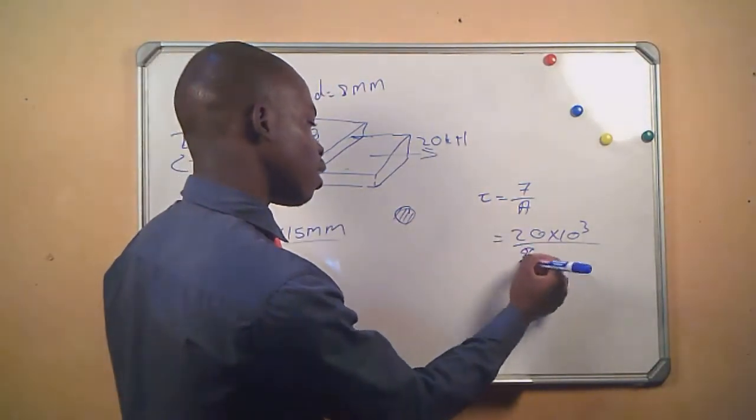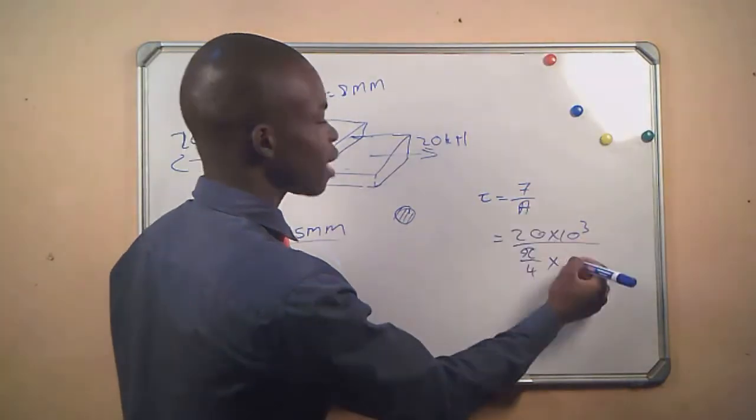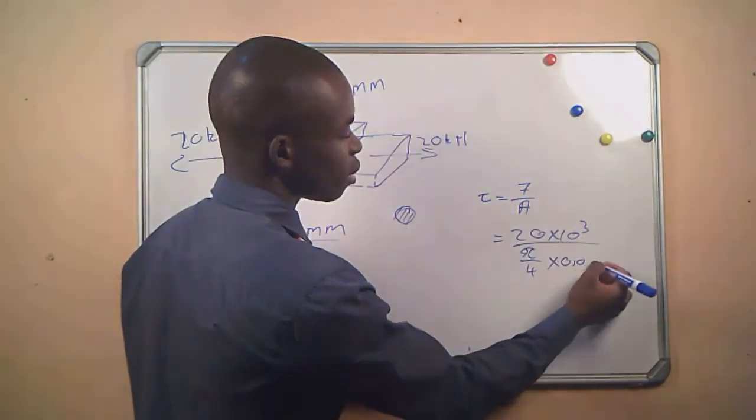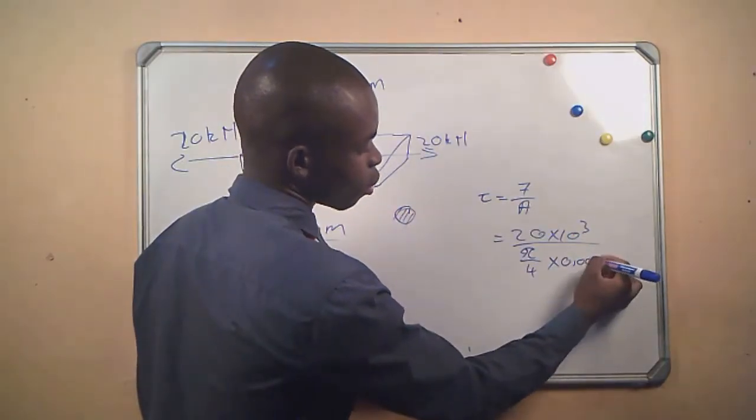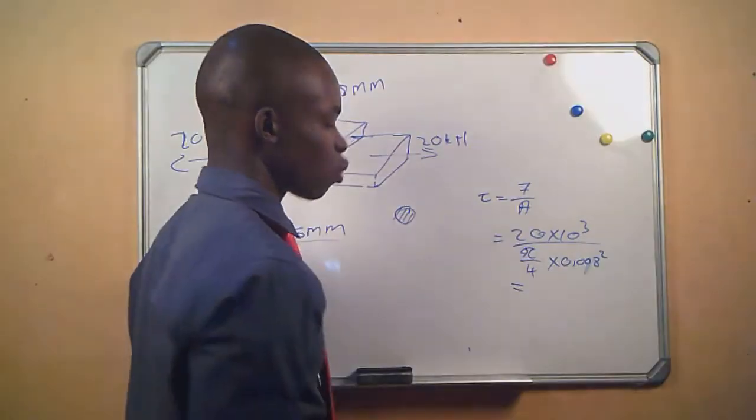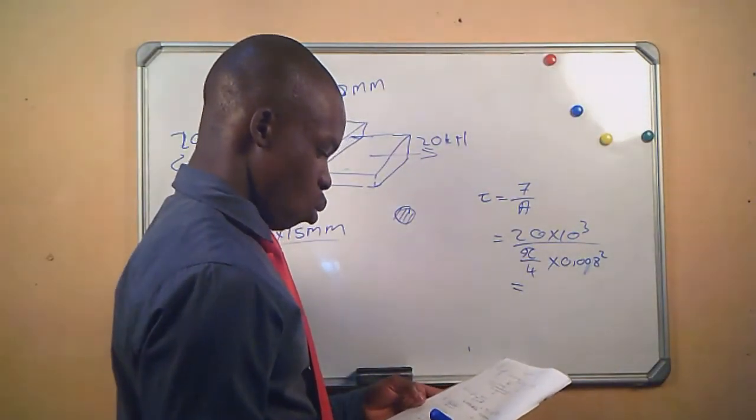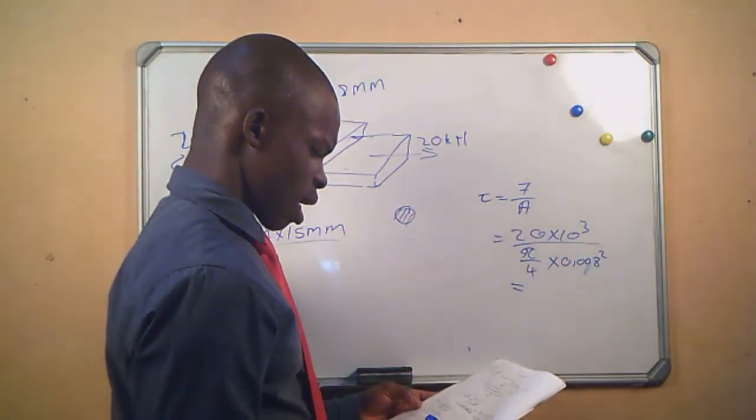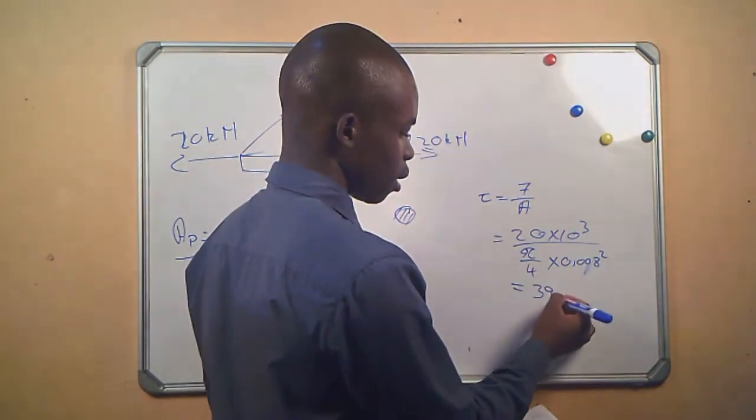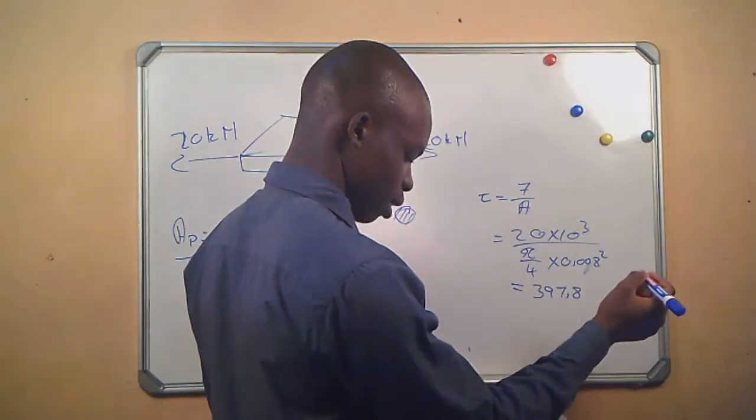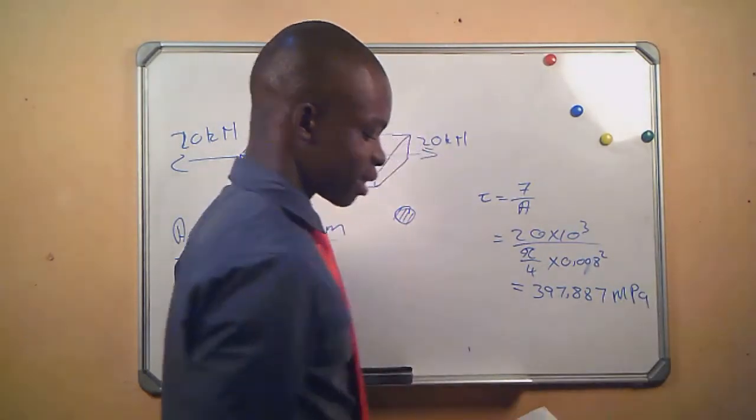And then the area will be π/4 times the diameter of 0.008 squared. And then that will give us a shear stress of 397.887 megapascals.